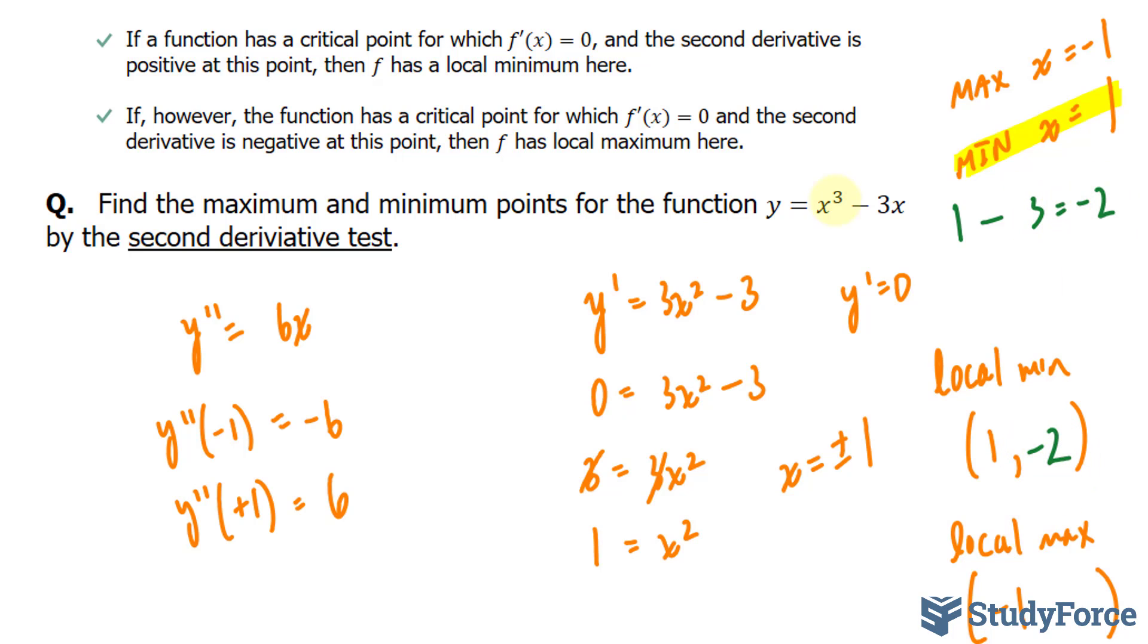And similarly, if we put negative 1 into here, we get negative 1 plus 3, and that gives us positive 2.